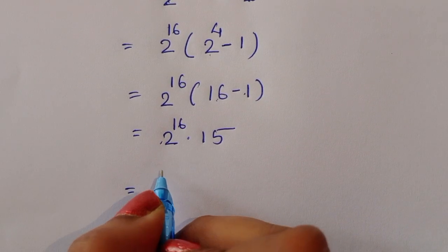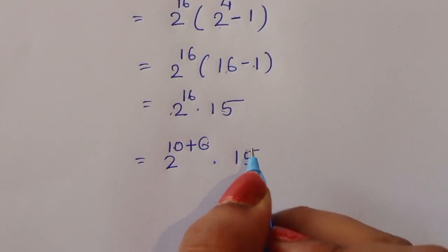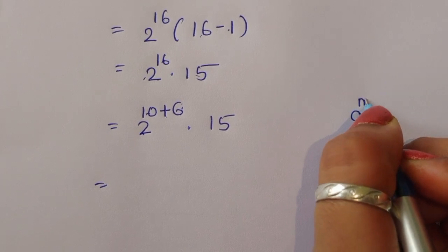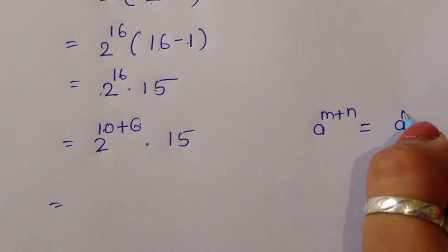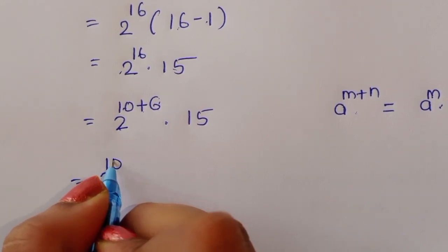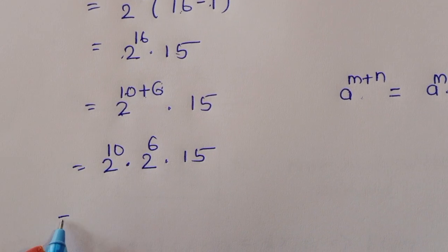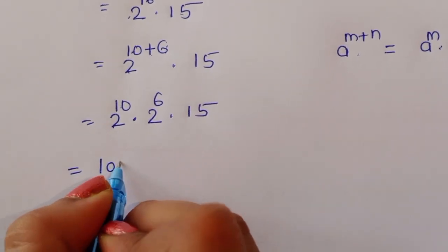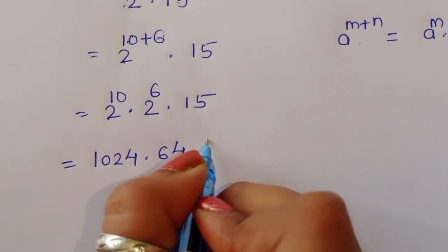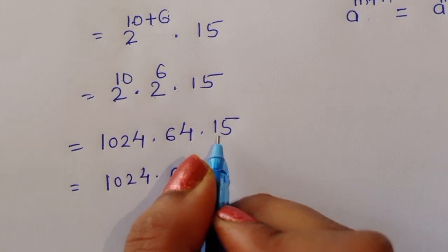Now we can write 2 power 16 as 2 power 10 plus 6. Using the formula a power m plus n equals a power m times a power n, we get 2 power 10 times 2 power 6 times 15. Now 2 power 10 is 1024 and 2 power 6 is 64, so we have 1024 times 64 times 15.